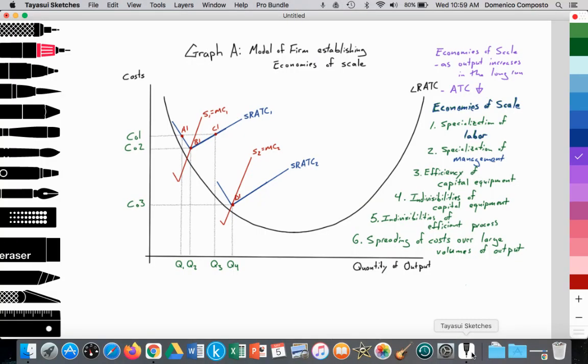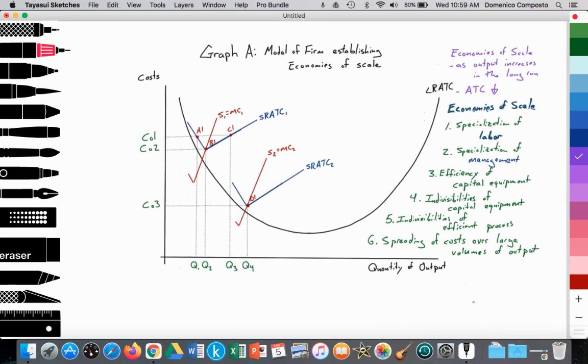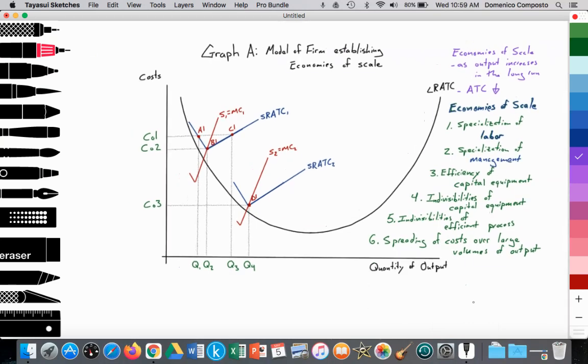This is a theory of the firm topic, and we'll be looking at the firm operating in the short run, where they have a fixed resource—land, labor, capital. They may vary all their resources to move into the long run and then moving back into the short run. So here we have graph A, a model of a firm establishing economies of scale over time.